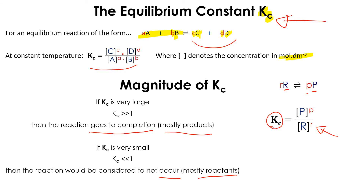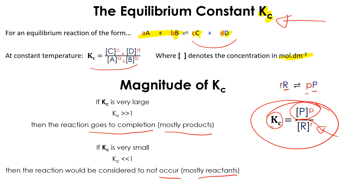Of course, the concentrations of products are multiplied by each other, and the concentrations of reactants are multiplied by each other, each raised to the power of their coefficients. We can then identify the magnitude: if Kc is much higher than 1 or much lower than 1, based on the formula when we look at the concentrations of reactants or products.